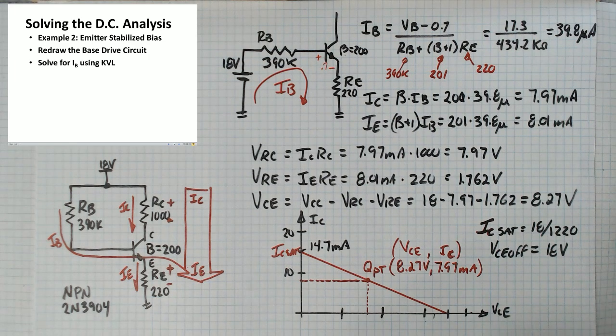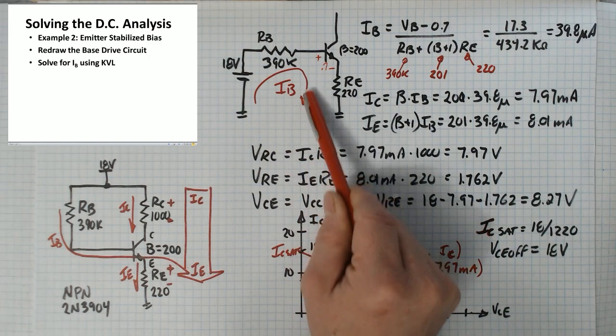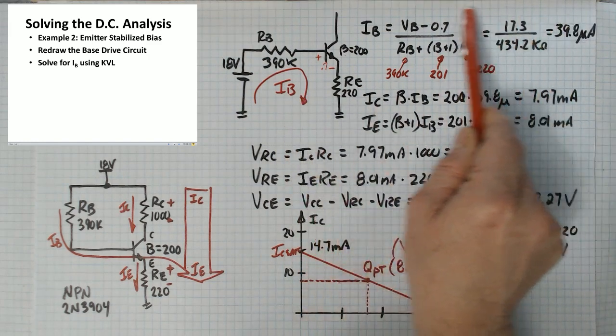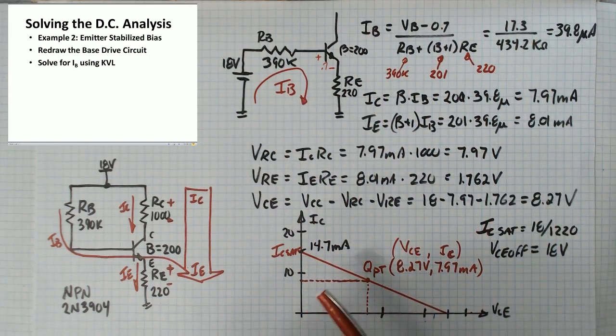Then you solve for IB using KVL. So I've drawn a KVL loop here and I worked out my equation. We've done this a couple of times with algebra.